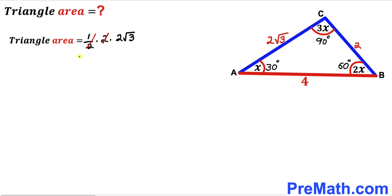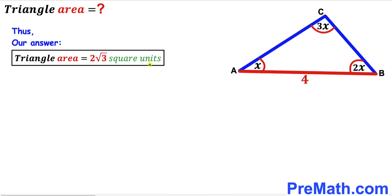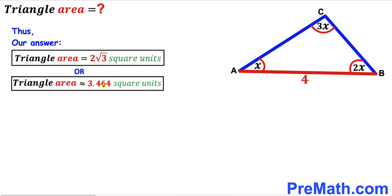Therefore, the area of triangle ABC turns out to be 2 times the square root of 3 square units, which is approximately equal to 3.464 square units. That's our final answer. Thanks for watching and please don't forget to subscribe to my channel for more exciting videos!